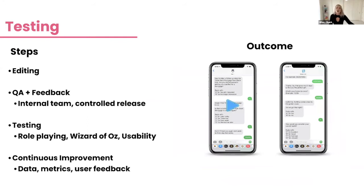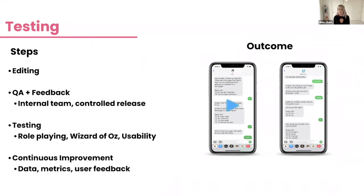For prototyping, I use a tool called BotMock. BotSociety is another option. You can create your flow chart there, write everything in there, and create a little video to share. This is very effective for sharing with your team or legal team — people who can't really understand your spreadsheet. Sending a video and saying 'this is the concept, this is what the experience will be like' is a very effective way to share when you can't build the live thing yet.